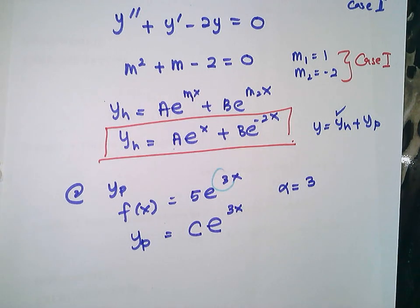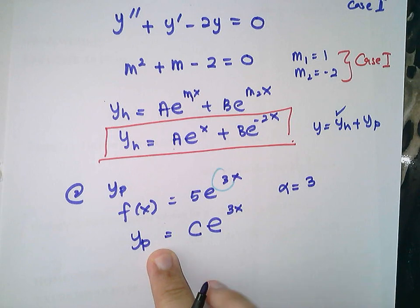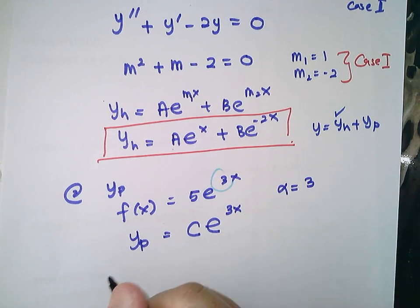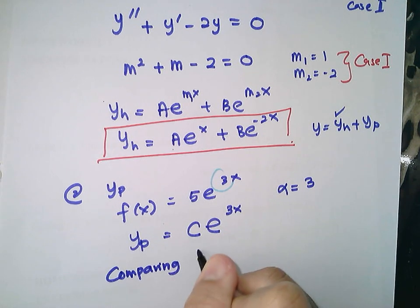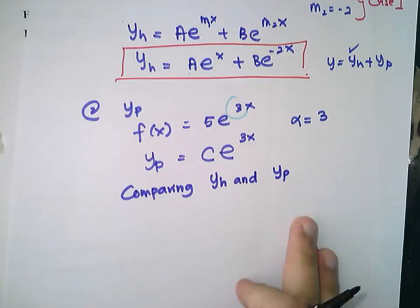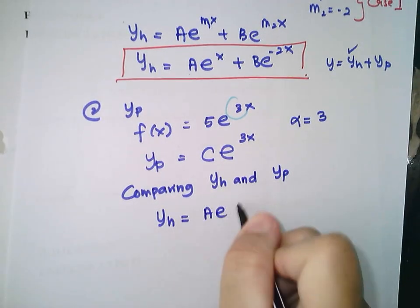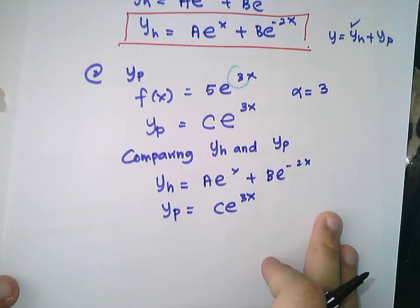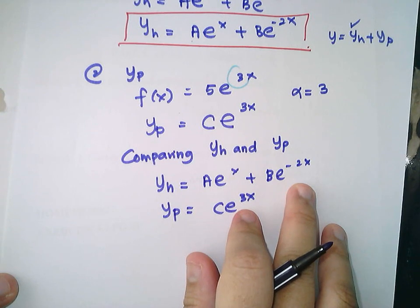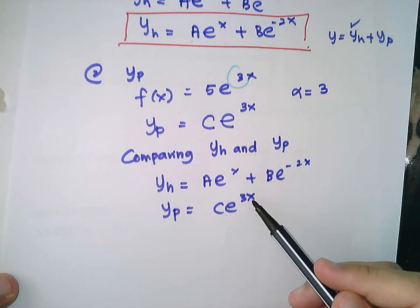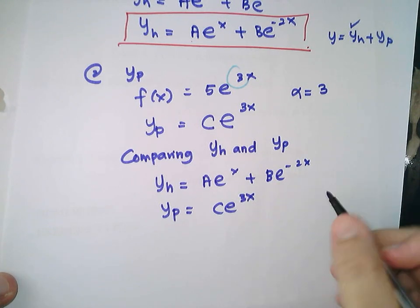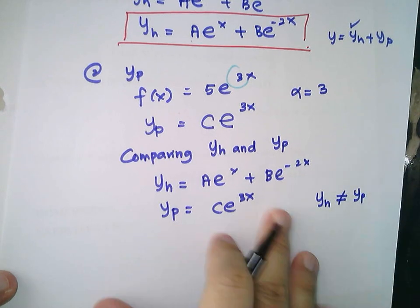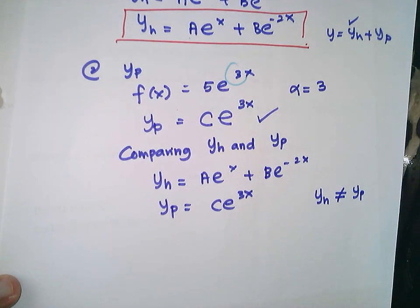You have to compare your yh and yp to find what the real yp is — to determine whether this yp is acceptable or not. Comparing: yh = ae^x + be^(−2x) and yp = Ce^(3x). Do you have any similar terms? No, you don't, because the powers of the exponential are different: 1, −2, and 3. Therefore yh ≠ yp, so you will choose Ce^(3x) as your yp.